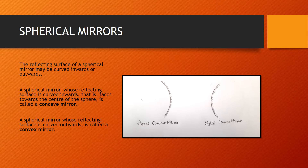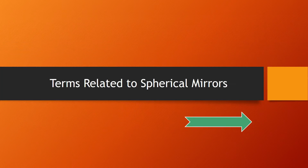Now let's discuss spherical mirrors. The reflecting surface of a spherical mirror may be curved inwards or outwards. A spherical mirror whose reflecting surface is curved inwards — that is, faces towards the center of the sphere — is called a concave mirror. A spherical mirror whose reflecting surface is curved outwards is called a convex mirror.